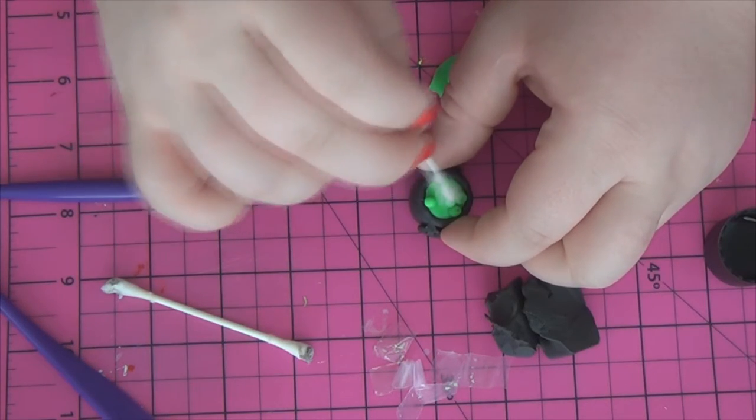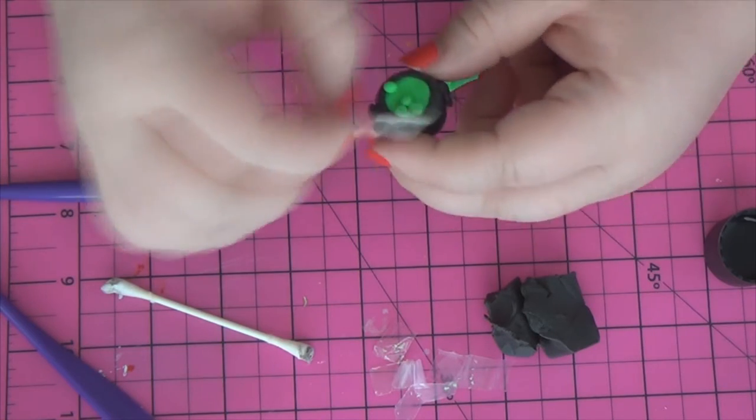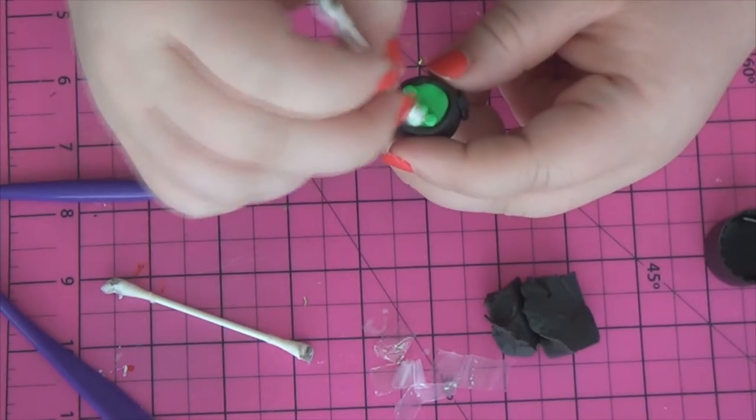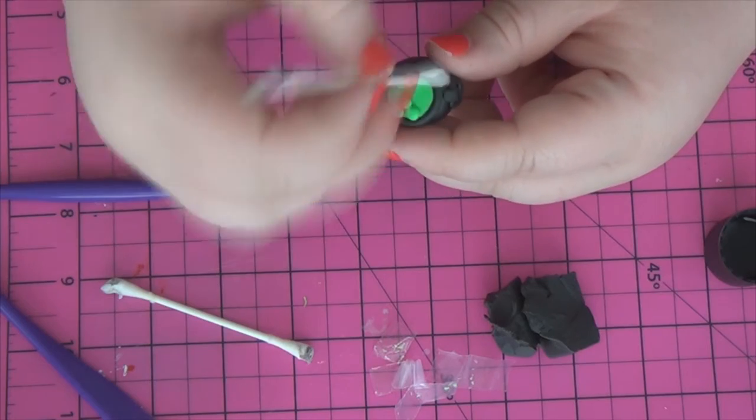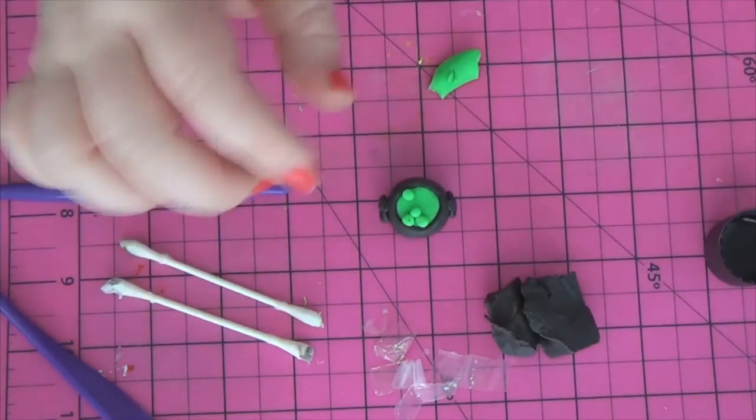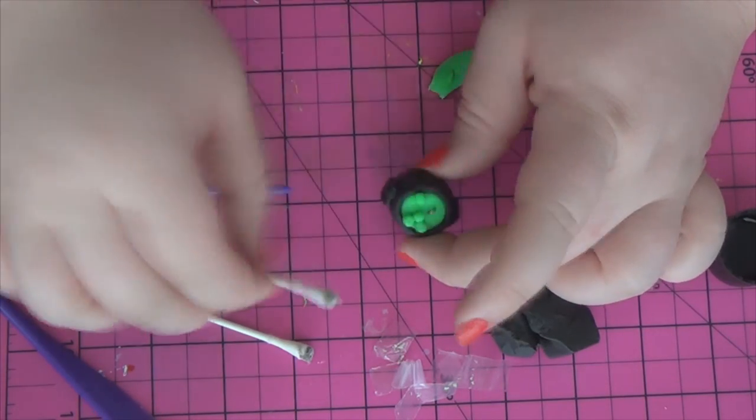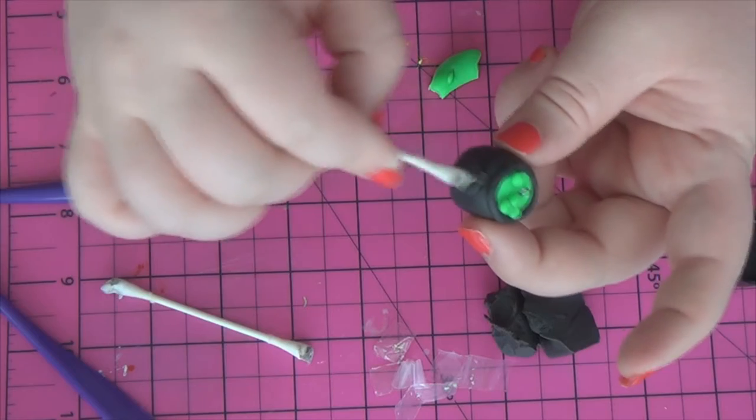So then I went ahead and I cleaned up my piece again, just to make sure that that stuff that I added was nice and clean, didn't have any lint in it. And once I did that, I pretty much was ready to bake it. So now that I had that all clean, I went ahead and I put in my eye pin and I put it off to the side.